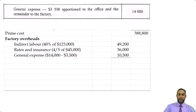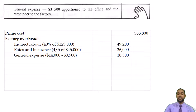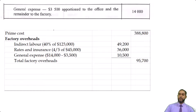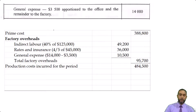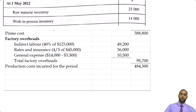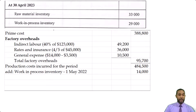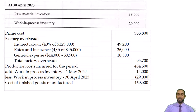Then we have general expenses. There's $3,500 apportioned to the office and the remainder to the factory. So from the $14,000 total value, take out $3,500, giving us $10,500 to the factory. Adding up those three items gives us total factory overheads. Adding that to the prime cost gives us the production cost incurred. We then adjust for work in process: the value at start is $14,000, which we add, and the value at end is $29,000, which we subtract. The final figure — the cost of goods manufactured — is $469,500.